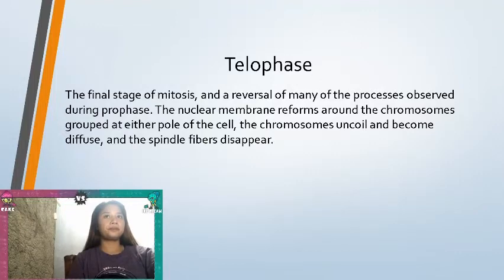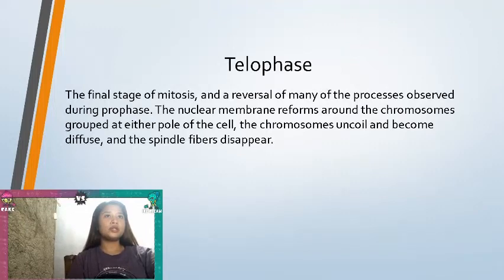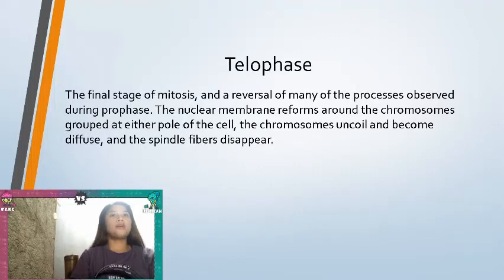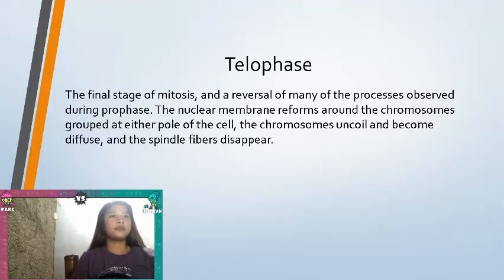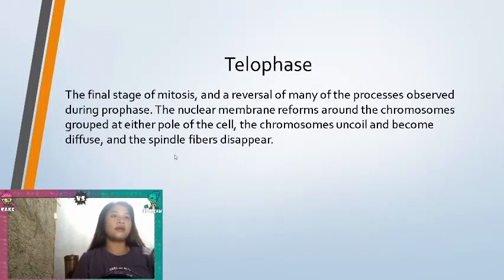Telophase is the final stage of mitosis, and a reversal of many of the processes observed during prophase. The nuclear membrane reforms around the chromosomes grouped at either pole of the cell. The chromosomes uncoil and become diffuse, and the spindle fibers disappear.